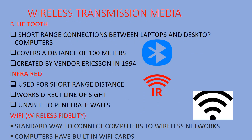Wireless transmission media is also called unbounded transmission media. The first type is Bluetooth — you are all familiar with it. It is inbuilt in our phones, laptops, and other smart devices. Bluetooth has only a short range — it can connect only up to 100 meters. It was created by Ericsson in the year 1994.